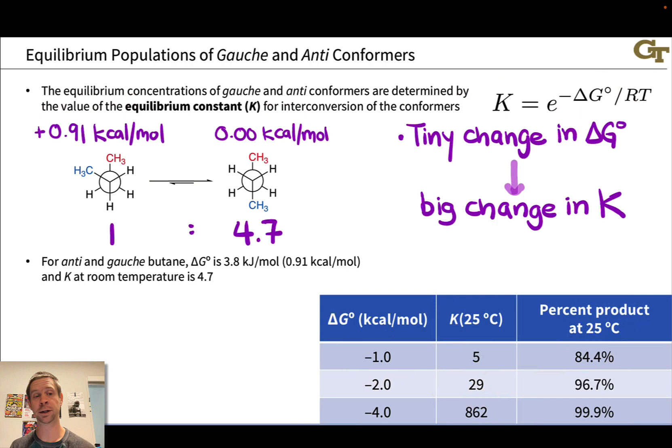Meaning at equilibrium, in a sample of butane at chemical equilibrium, there are about five molecules of anti-conformer for every one molecule of gauche conformer. So not a negligible amount of gauche conformer, but the anti-conformer is definitely predominating.